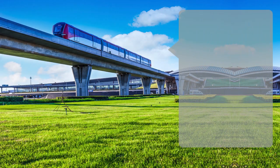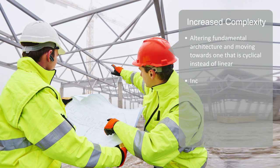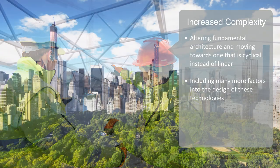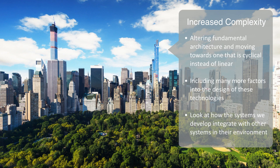Sustainability is a major transformative vector along which the technological substrate that supports our economies will be fundamentally altered, as its whole architecture moves towards one that is cyclical instead of linear, likely to be running on a much lower grade of distributed and pervasive energy sources. It takes us into the world of complexity in that it requires us to include many more factors into the design of these technologies — not just economic and technical factors, but now a whole new set of environmental factors. It also requires us to understand how the systems we develop integrate with other systems in their environment, in order to achieve not only subsystem optimization, but efficiency on the macro scale, requiring an integrated and more holistic approach to the design engineering of these technologies.